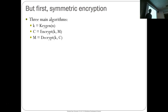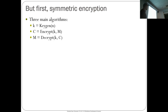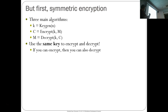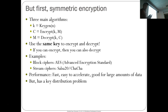Symmetric encryption has three main algorithms: a key generation algorithm that generates a key k, then with that key you can take a message m and encrypt it to get ciphertext c, and then with that same key you can decrypt the ciphertext to get the original message back. Examples include block ciphers like AES, which is the crypto scheme underneath most web connections, and some stream ciphers for large data streams.